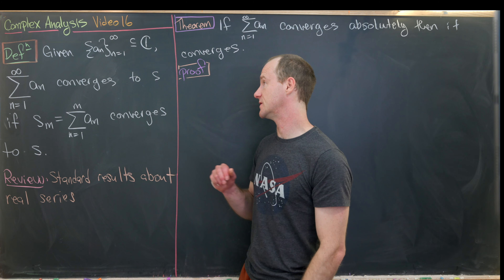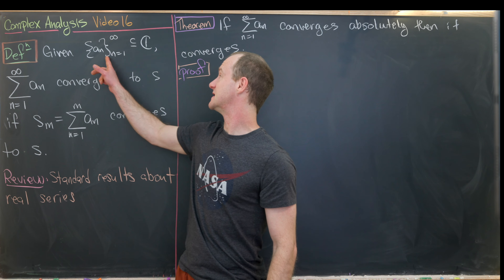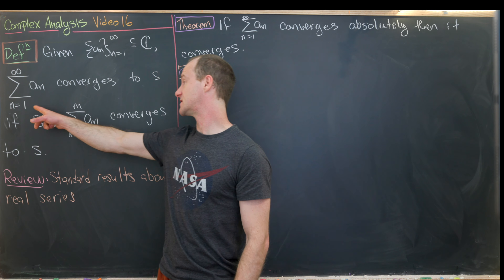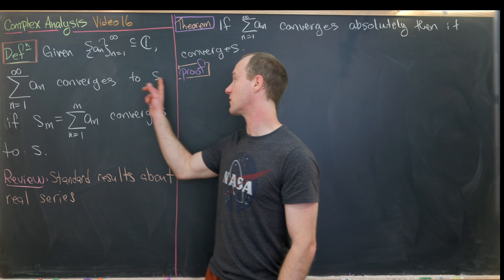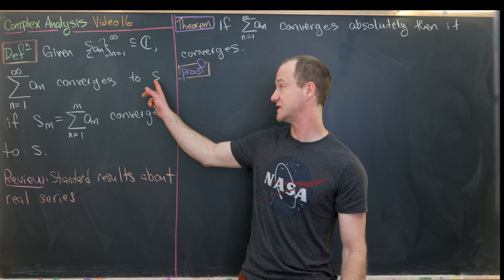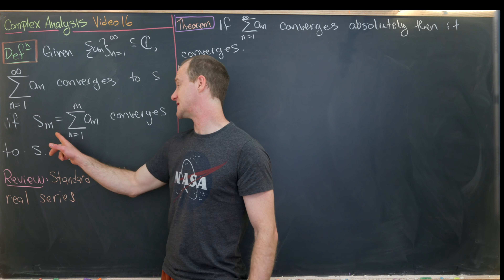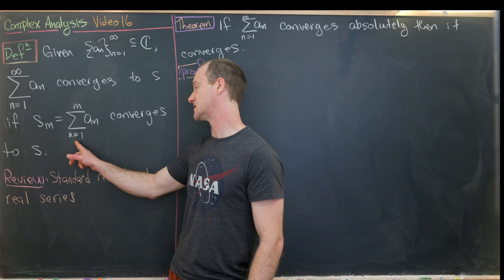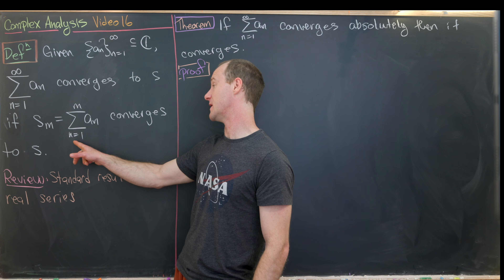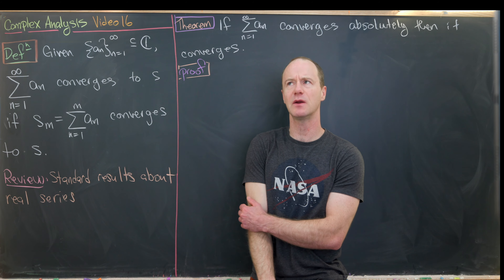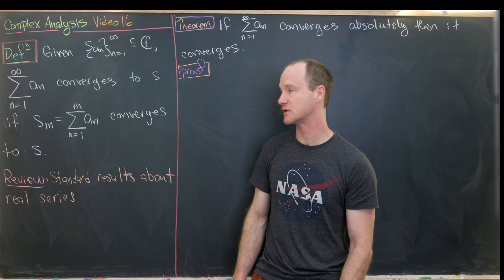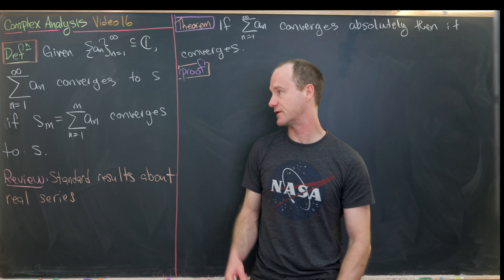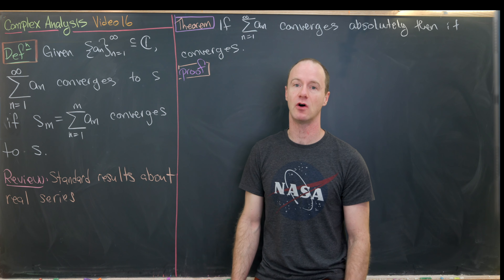So let's start with a definition. Given a sequence of complex numbers a_n as n goes from 1 to infinity, we say that the sum from n equals 1 to infinity of a_n converges to a complex number s if the sequence of partial sums also converges to s. Here s_m is the sum from n equals 1 to m of a_n. In a previous video we covered sequences of complex numbers, so this reduces convergence of a series to the notion of convergence of a sequence.